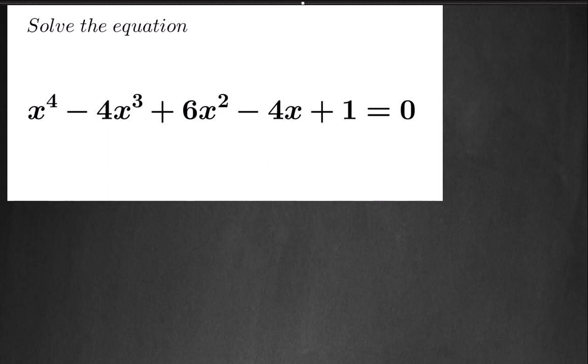Welcome back. We have an equation to solve in x. We have x to the power of 4 minus 4x cubed plus 6x squared minus 4x plus 1 is equal to 0. We are going to see that we have some symmetric coefficients here that is going to help us solve this one.